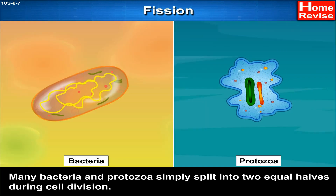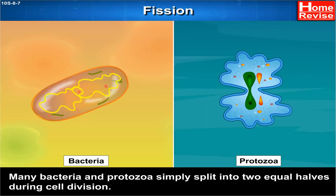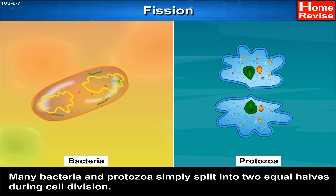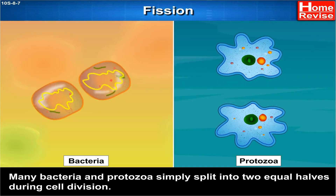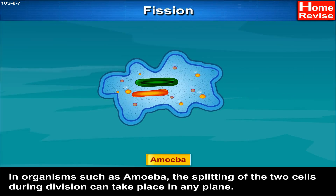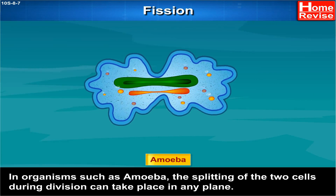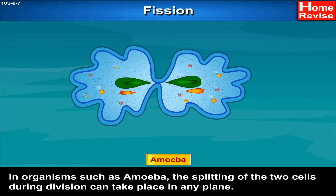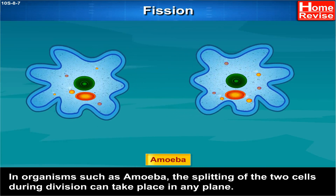Many bacteria and protozoa simply split into two equal halves during cell division. In organisms such as amoeba, the splitting of the two cells during division can take place in any plane.